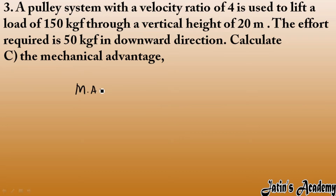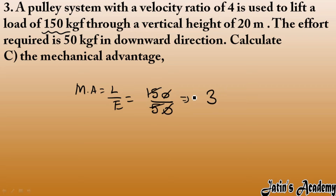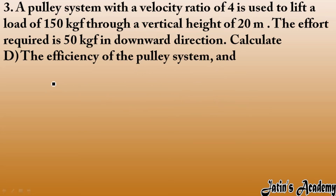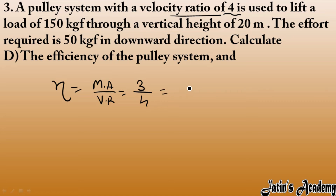Mechanical advantage = load ÷ effort = 150 kgf ÷ 50 kgf = 3. For efficiency: efficiency = mechanical advantage ÷ velocity ratio = 3 ÷ 4 = 0.75. Converting to percentage gives 75 percent efficiency, meaning some friction is present.